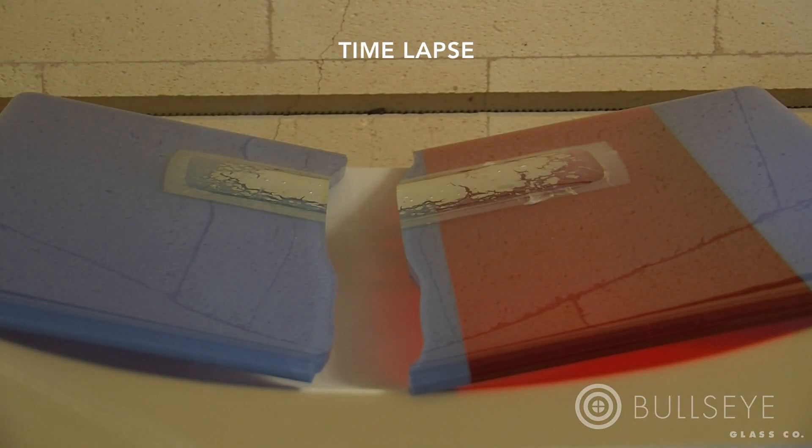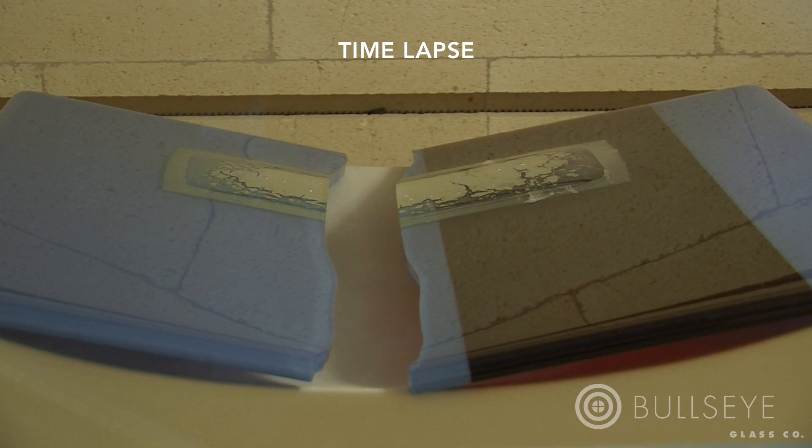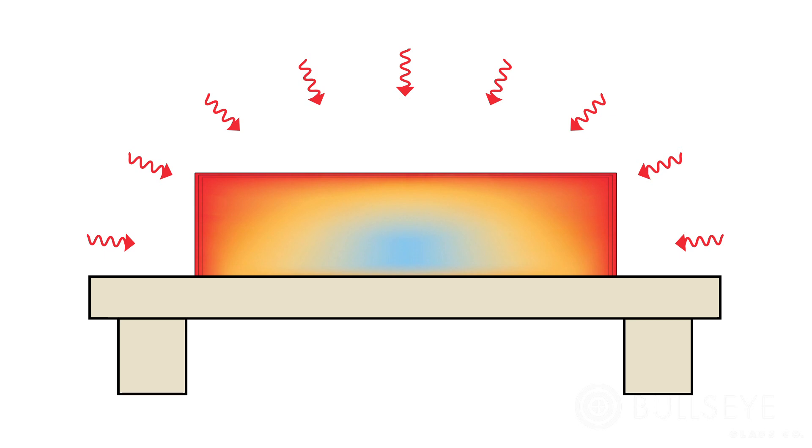Thermal shock is caused by either heating or cooling a piece too rapidly while the glass is behaving like a solid. As glass heats and cools, it expands and contracts.